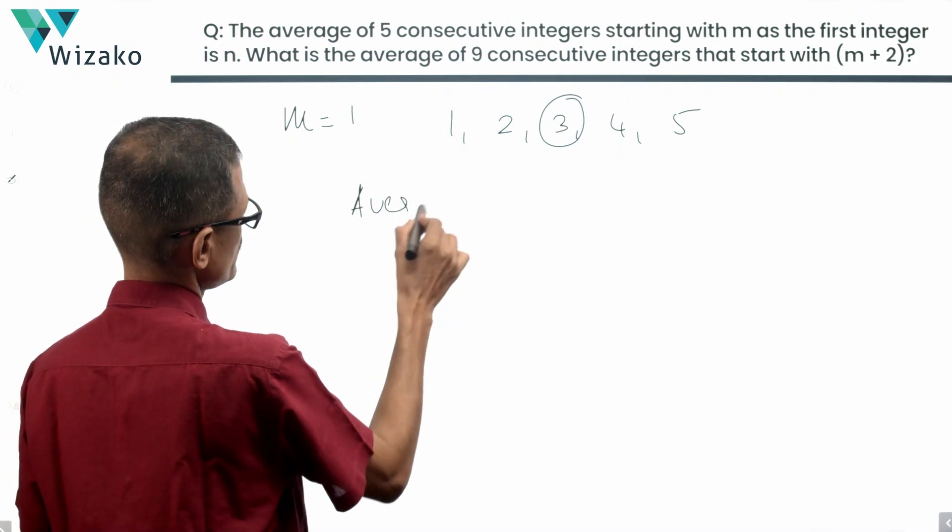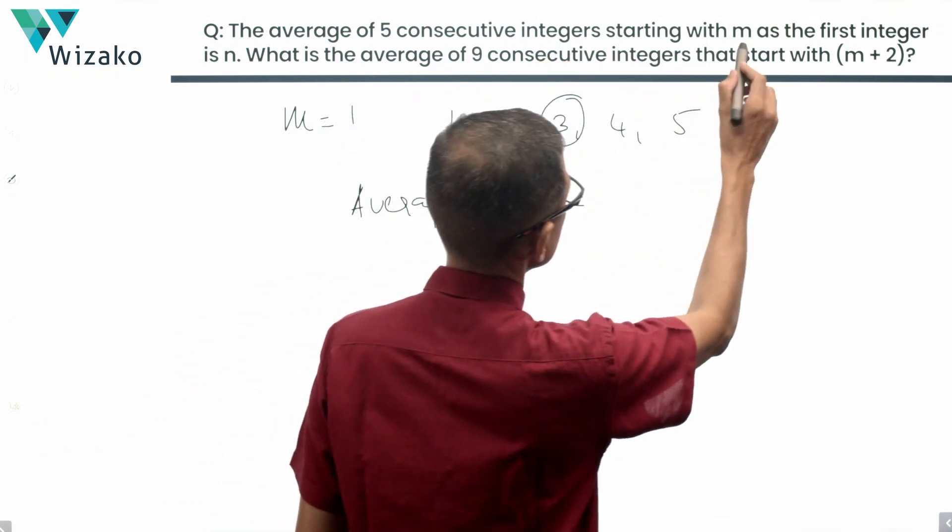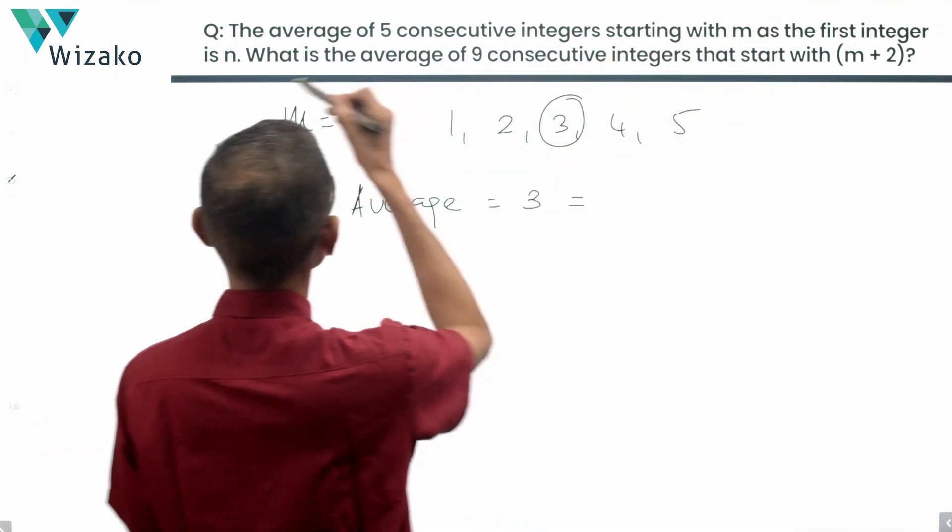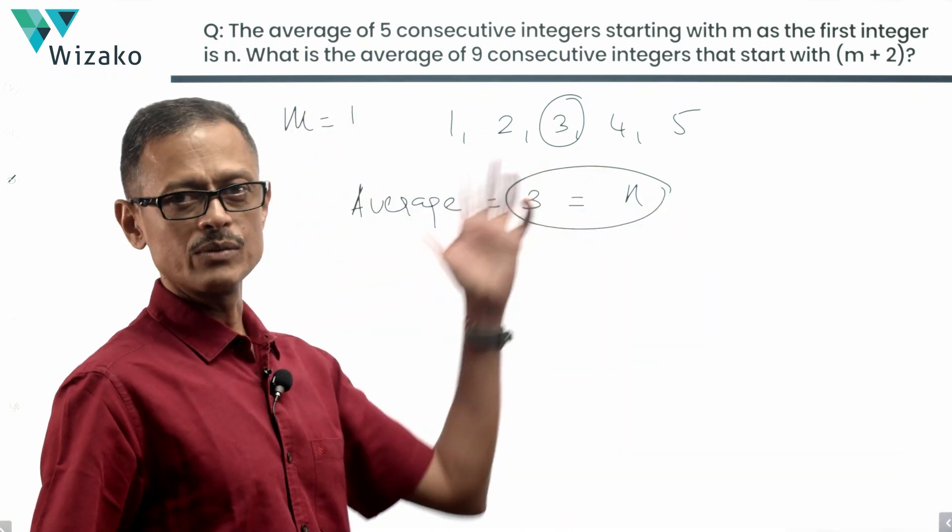The average for the first sequence is equal to 3, which the question says. The average of five consecutive integers starting with m is n is what they are saying. So n is equal to 3 or 3 is equal to n.